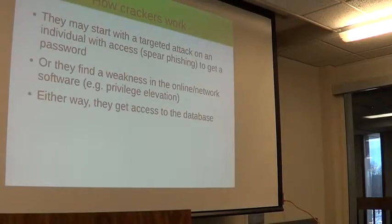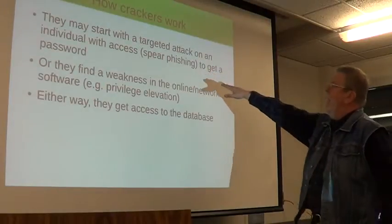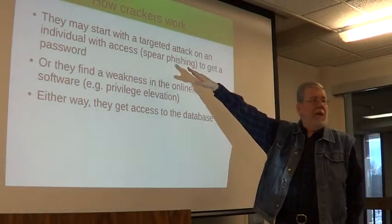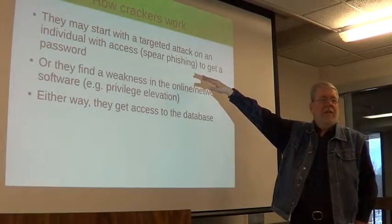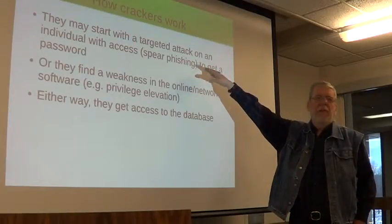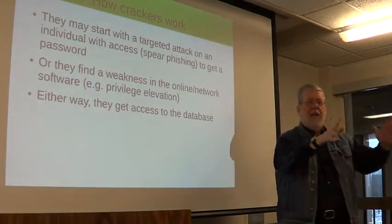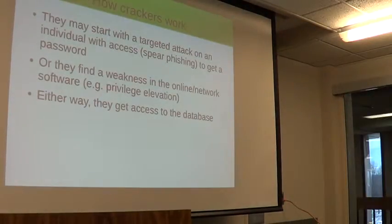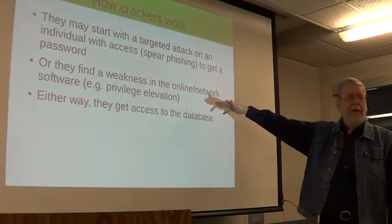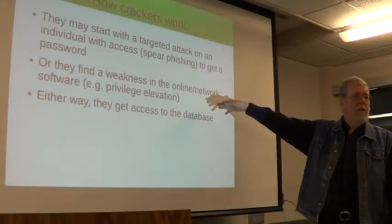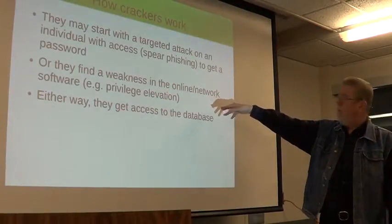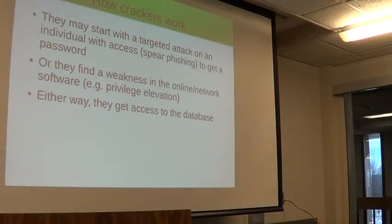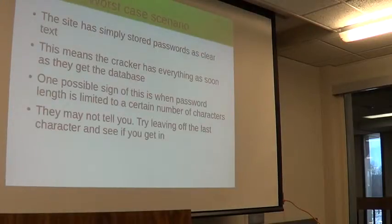How crackers work: first they've got to find a way to get in. That could be a targeted attack on an individual — this is called spear phishing, and it's getting very sophisticated. You identify someone, say a particular executive is a golf fanatic, send him an email with a link to a golf weekend special, and he'll click on it. It could also be a weakness in the online network, a privilege elevation attack. In the case of Target, it was going through the point of sale system — they got through that into the network, and then what they're after is the database with all of those passwords.